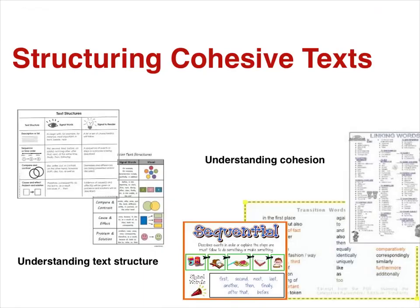Within the two standards under structuring cohesive text, students are understanding text structure and organization based on purpose, text type, and discipline, and understanding cohesion and how language resources across a text contribute to the ways a text unfolds and flows.